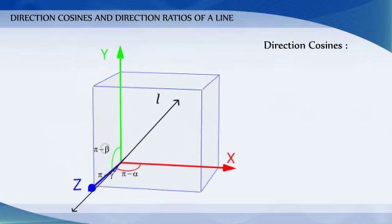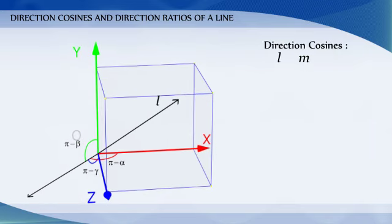Direction cosines are denoted by the letters L, M, and N.